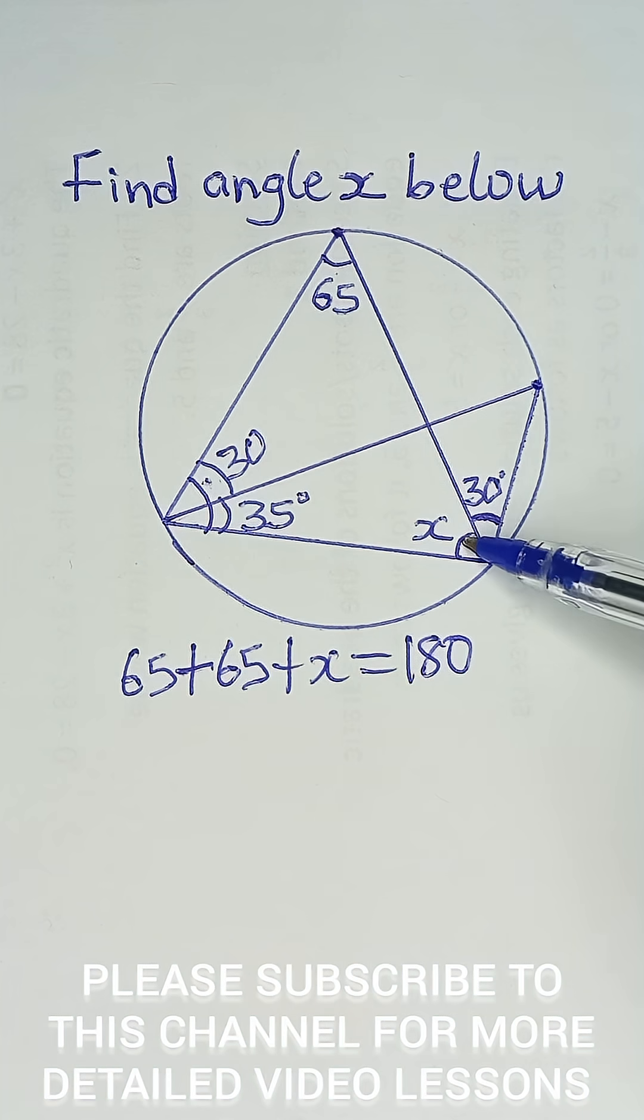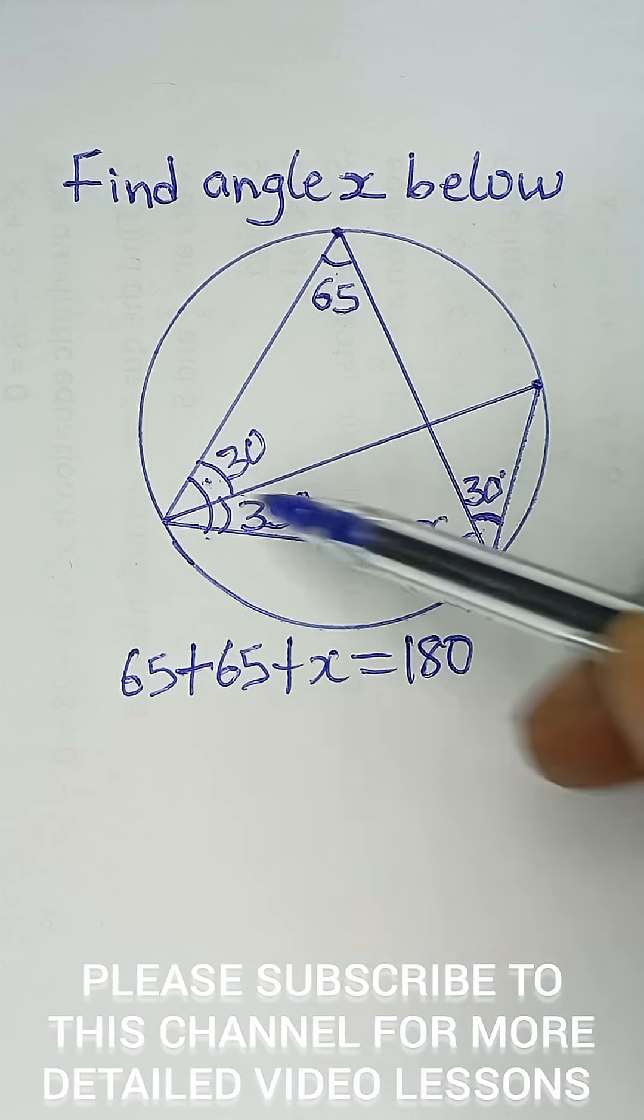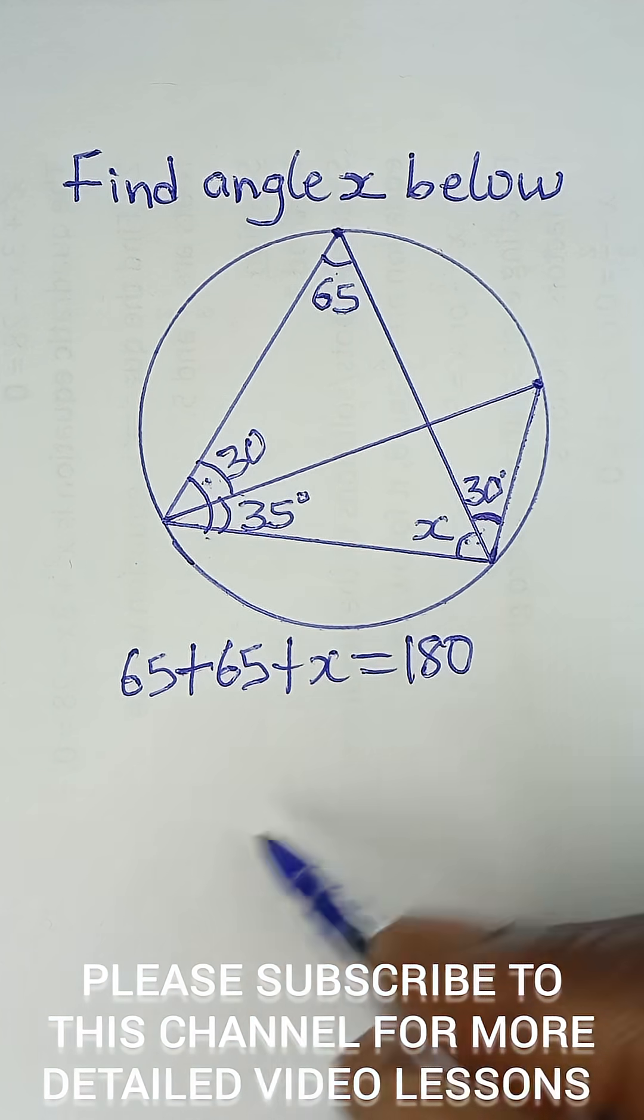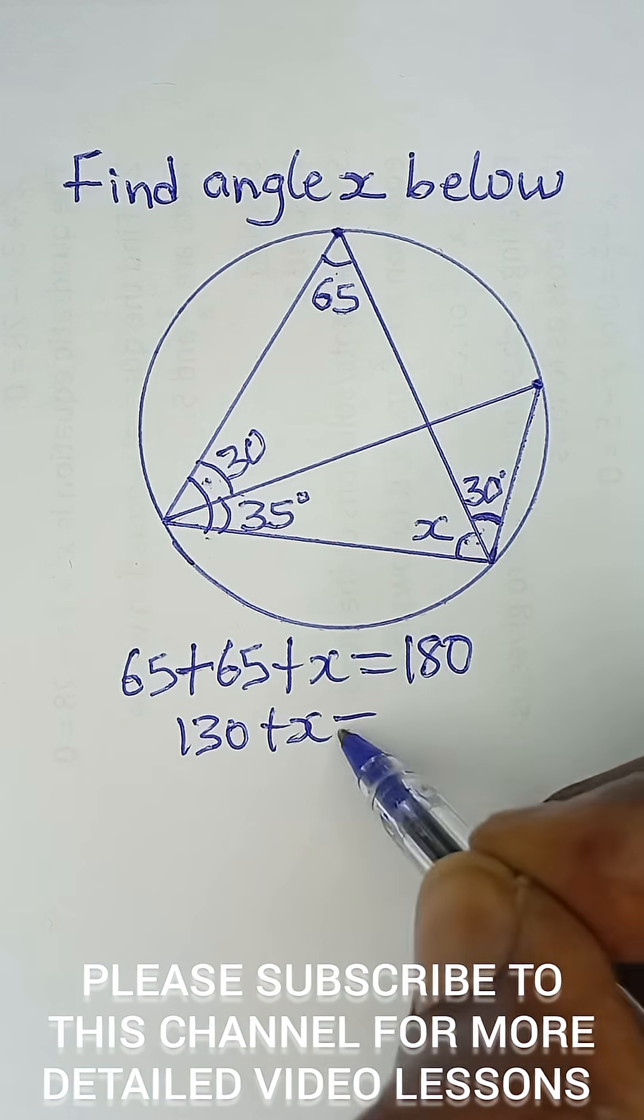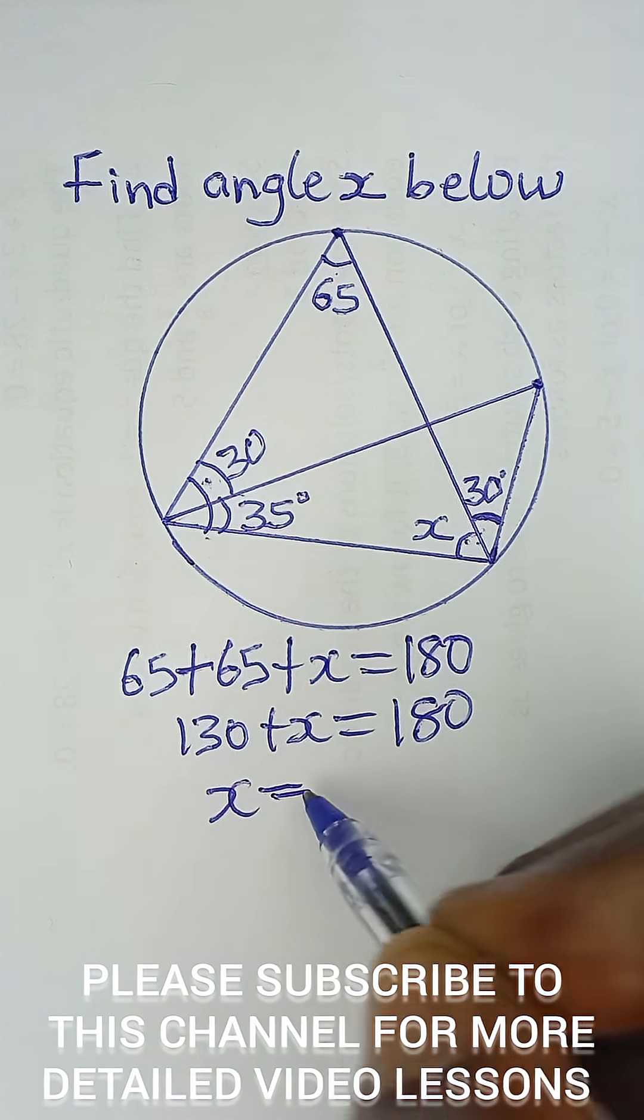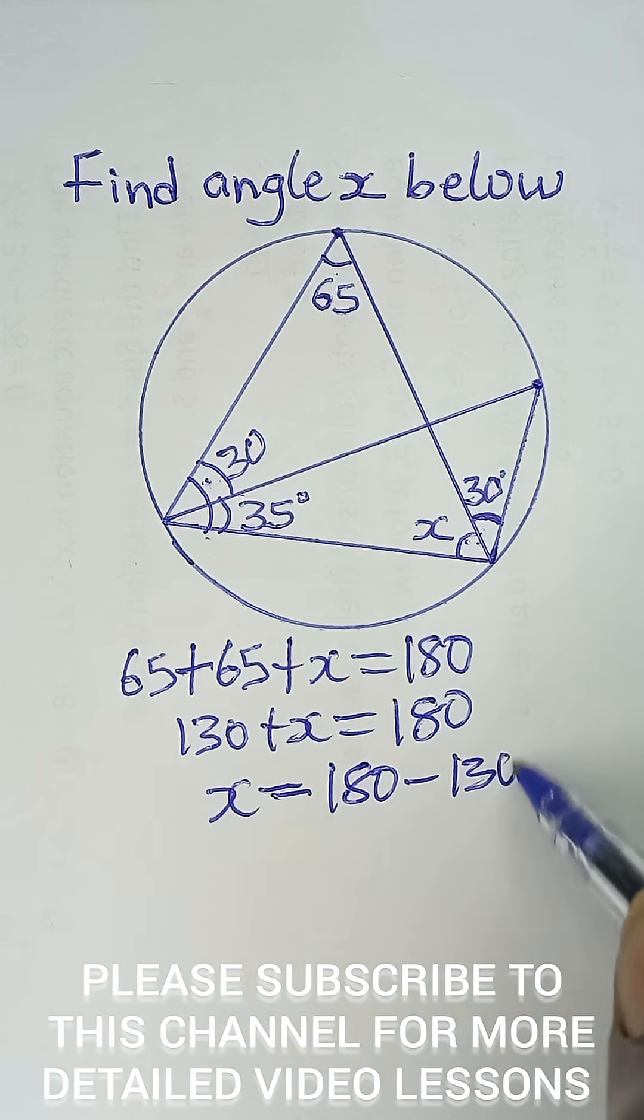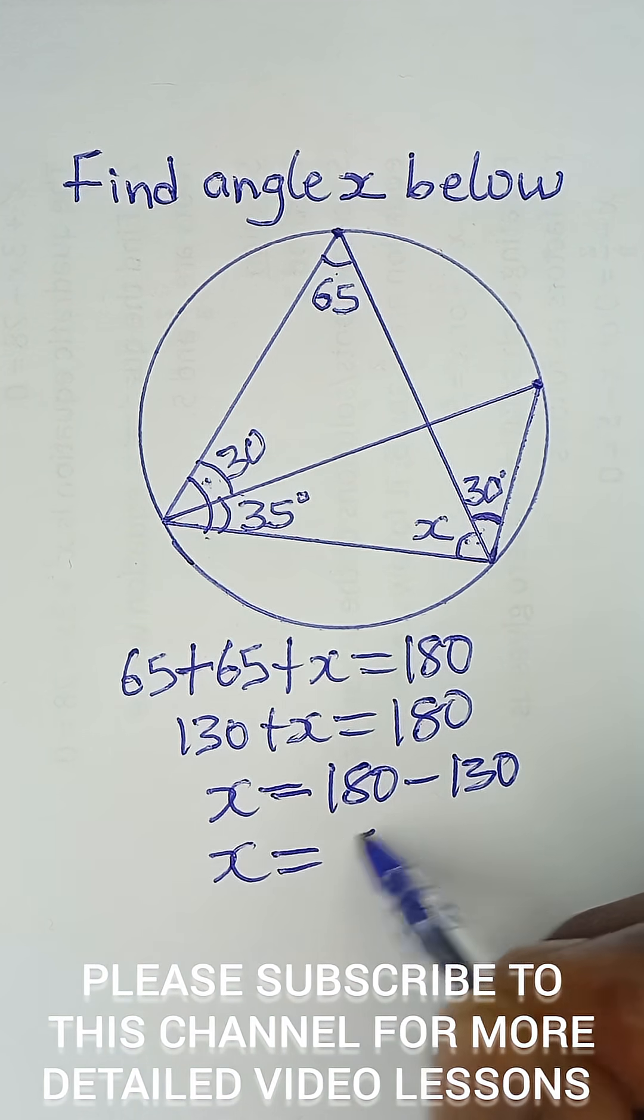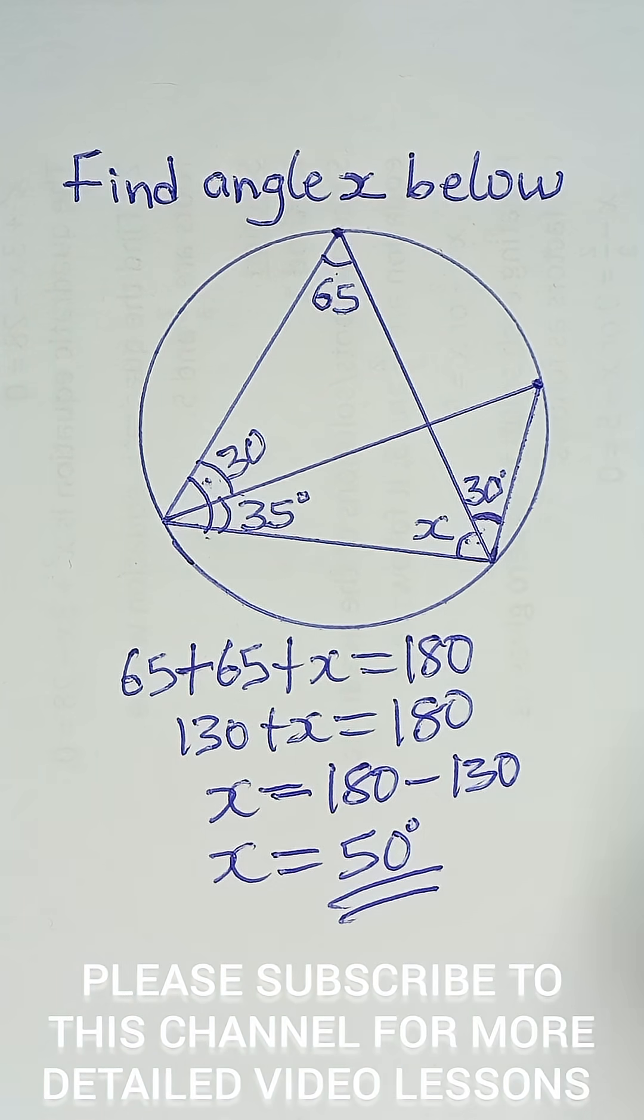So this is 65, and this is 65, and this is x. Angles in a triangle sum up to 180, so 130 plus x equals 180. Finally, x equals 180 minus 130, which gives us x equals 50 degrees as the final answer. Please subscribe to this channel for more videos like this.